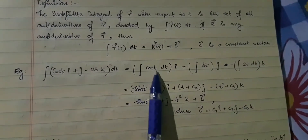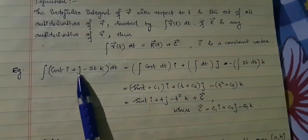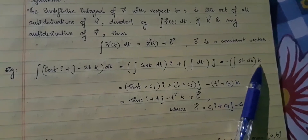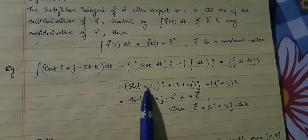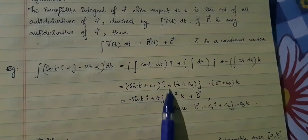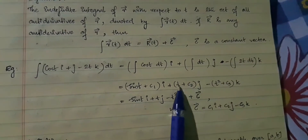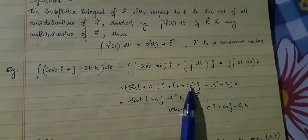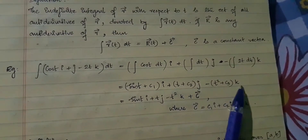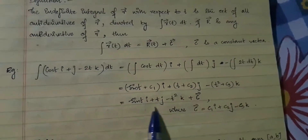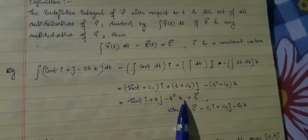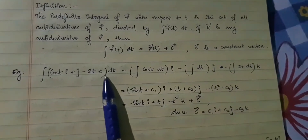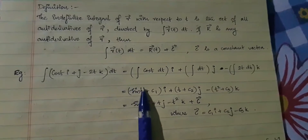So here we have integral of cos(t) dt · i plus integral of 1 dt · j minus integral of 2t dt · k. The integral of cos(t) is sin(t) plus c₁, giving sin(t)i; then t plus c₂, giving tj; minus t² plus c₃k. Taking c₁i + c₂j − c₃k as a constant vector, this is how we find the indefinite integral of a vector-valued function.